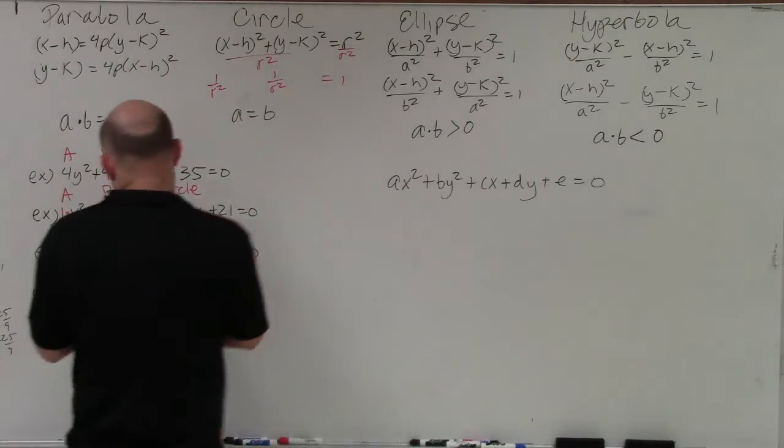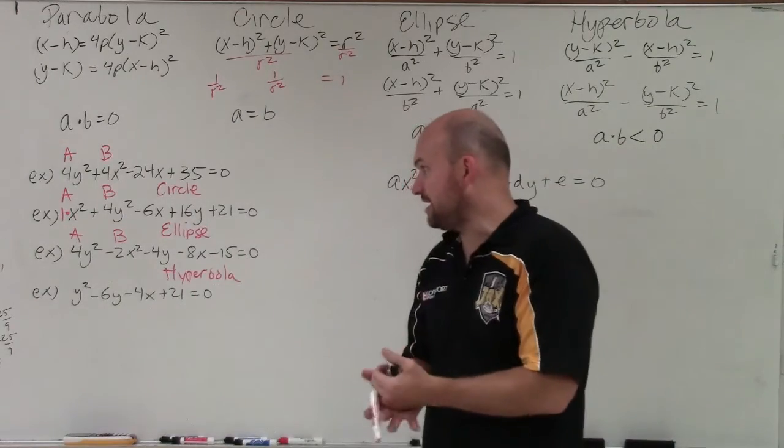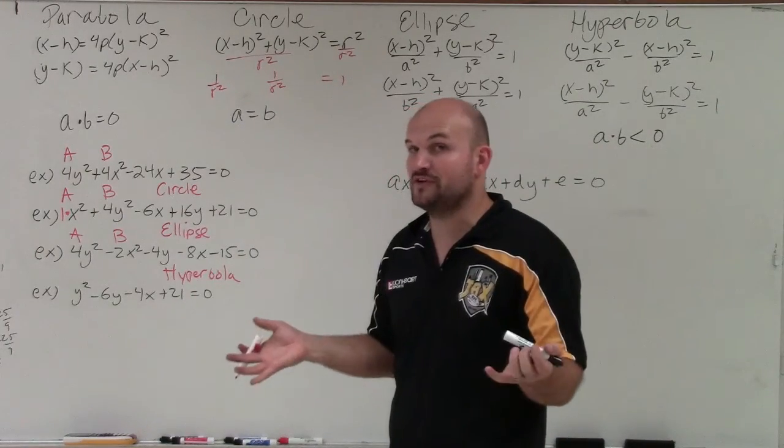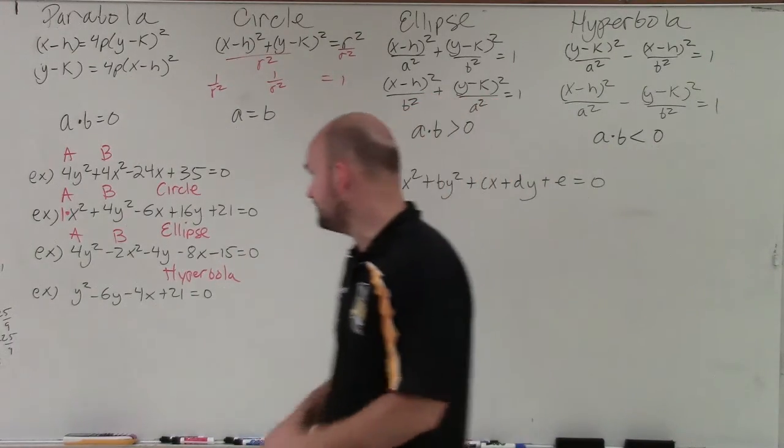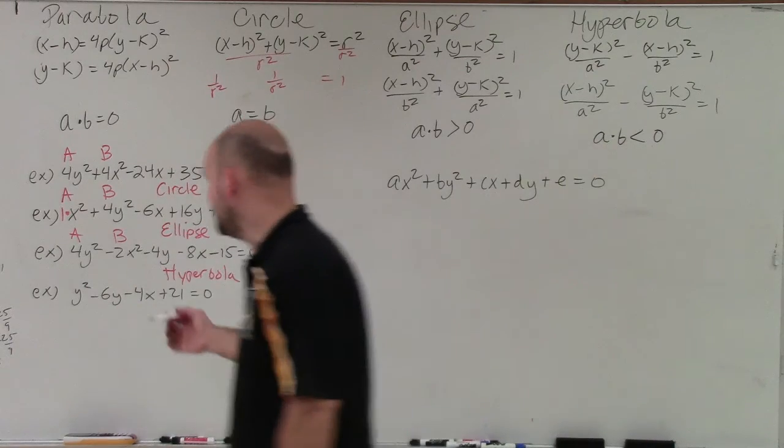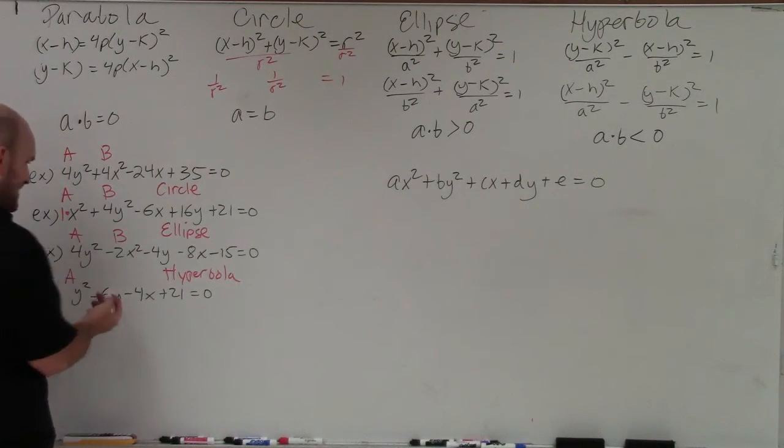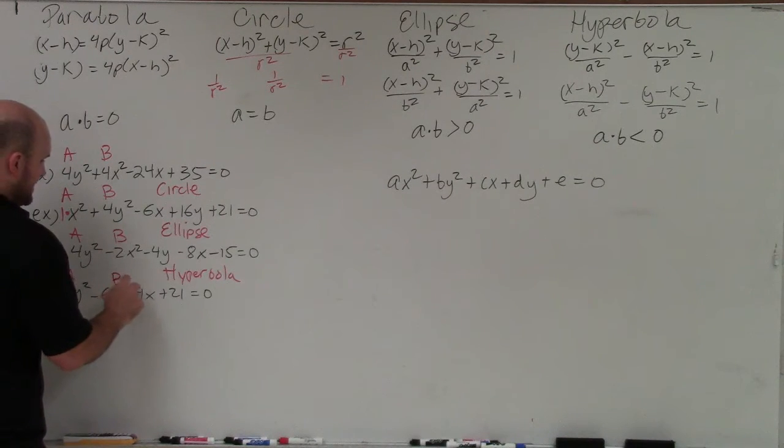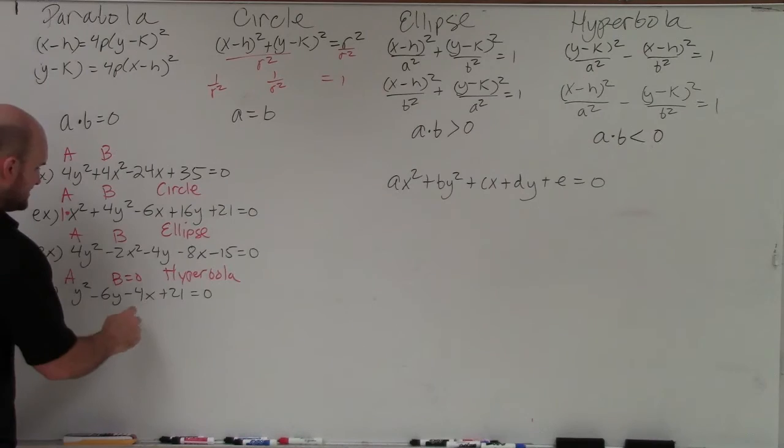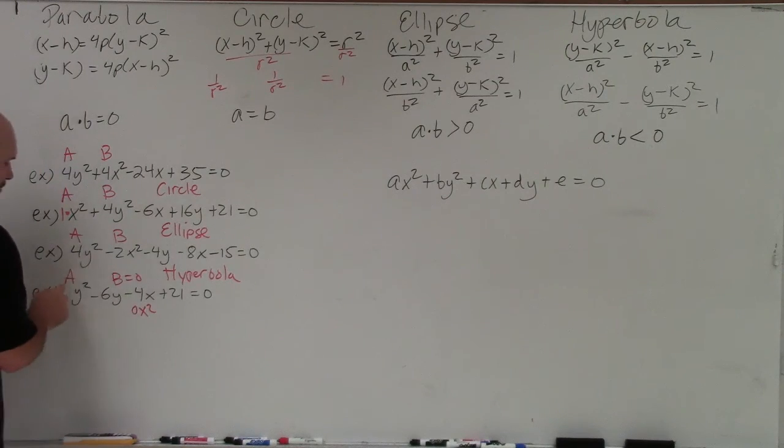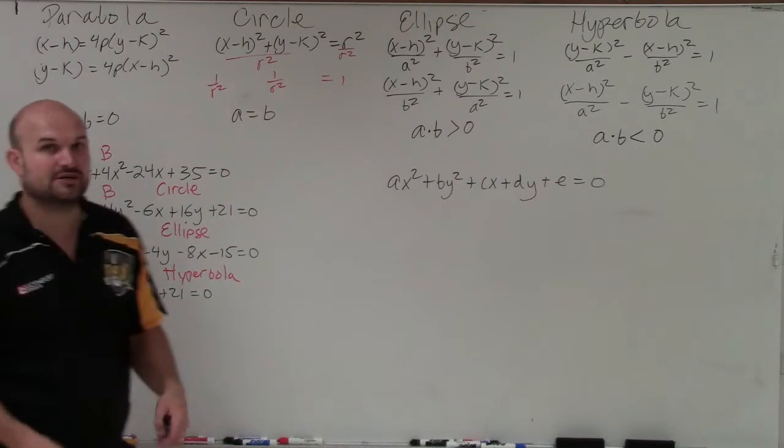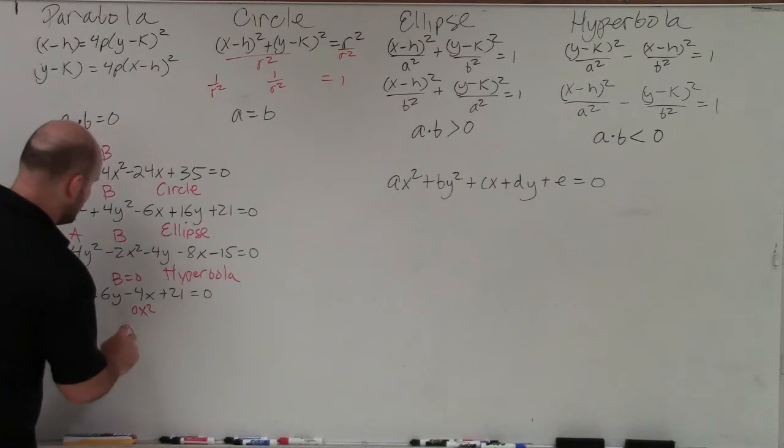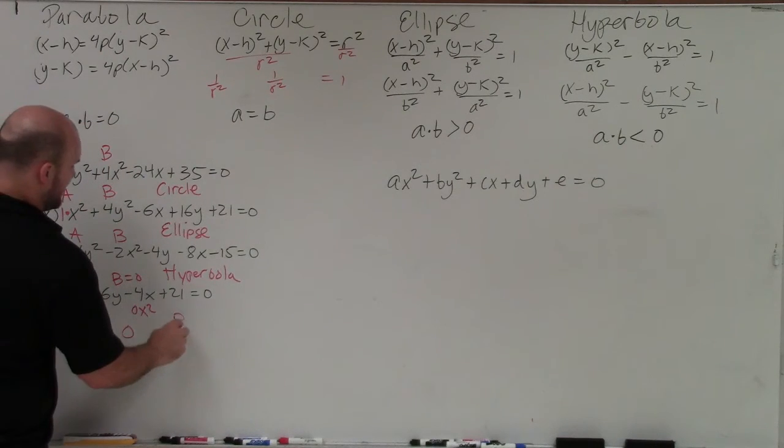And again, if you were to group these and complete the square, they would have different coefficients, but one would be positive, one would be negative. And the last example you see here is you can say, all right, well, I have an a, but where's b? There is no b, right? There is no x². So therefore, b has to equal 0. It has to be 0x². So therefore, a, which is 1, 1 times 0 is going to give you 0. So therefore, that tells us that we're going to have a parabola.